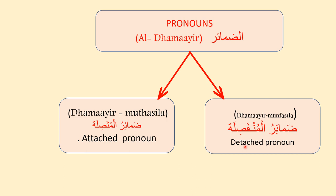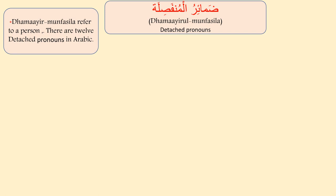The two types are attached pronouns and detached pronouns. Today we are focusing on Dhamaa'ir al-Munfasila, or detached pronouns. Detached pronouns means separate pronouns. Dhamaa'ir al-Munfasila refers to a person, and there are twelve detached pronouns in Arabic.